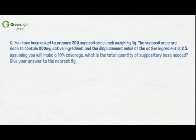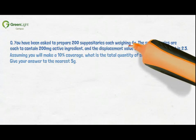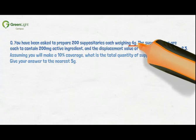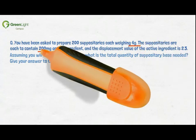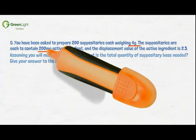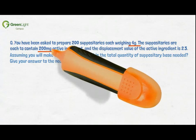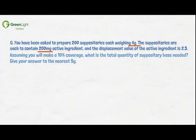Firstly, what information does the question provide? Each suppository weighs 4 grams, each suppository contains 200 mg active ingredient, and you have been provided with a displacement value of 2.5. When attempting a question, it is useful to highlight or underline any key points provided.